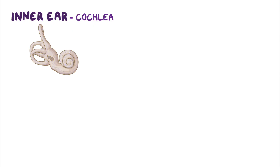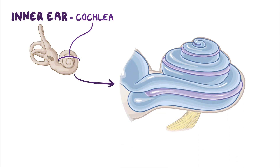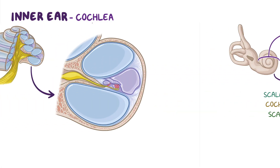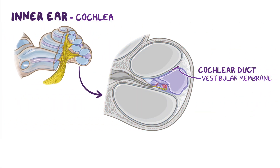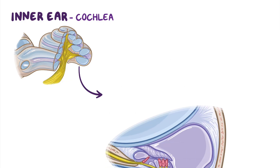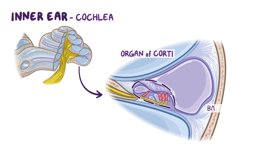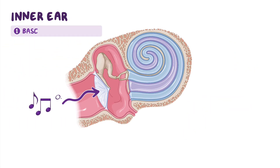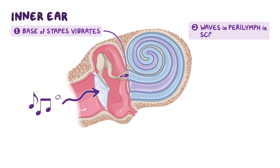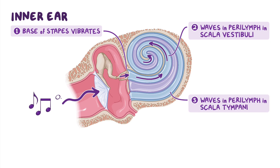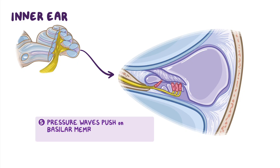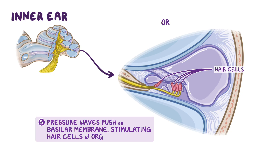The cochlea is a bony tube that spirals on itself, containing three fluid-filled cavities called the scala vestibuli, the cochlear duct, and the scala tympani. The roof of the cochlear duct is formed by the vestibular membrane, while the floor is formed by the basilar membrane. The organ of hearing, called the organ of Corti, is fixed to the basilar membrane and is covered by the tectorial membrane. The base of the stapes vibrates, causing waves in the perilymph in the scala vestibuli, which continue within the scala tympani at the helicotrema to reach the round window. Pressure waves push on the basilar membrane, causing it to move and stimulating the hair cells of the organ of Corti, which are innervated by the cochlear branch of the vestibulocochlear nerve.